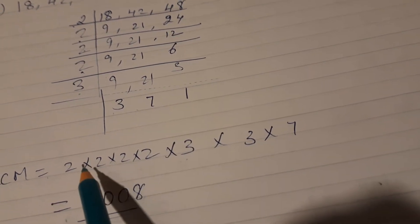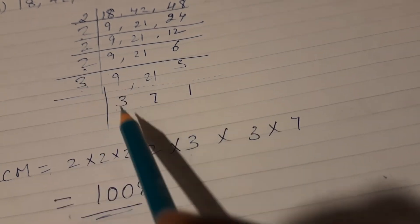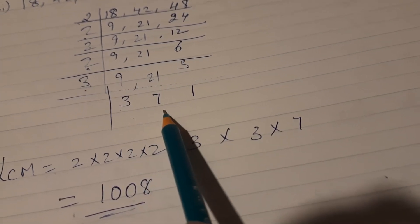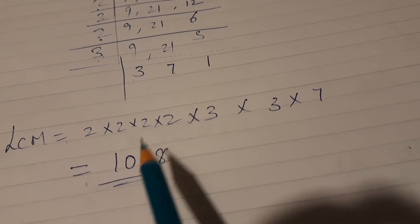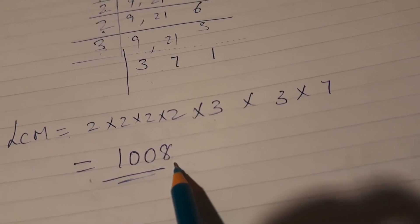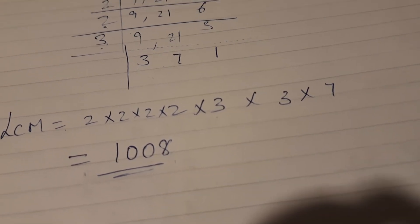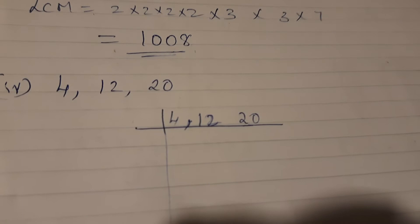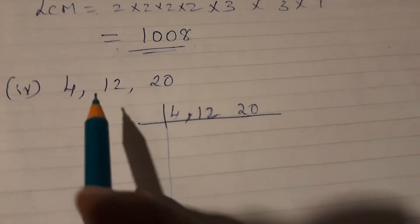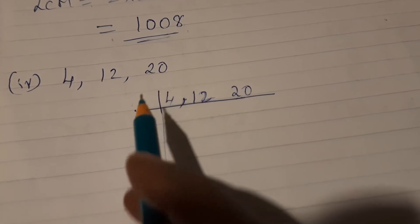Now you can see 3 and 7 which is uncommon, so LCM is the whole thing: 2 into 2 into 2 into 3 into 3 into 7, and that is 1008. You calculate and you see 1008. This is how we find out the LCM very easily. Now you can see three numbers for some children: 4, 12, 20.